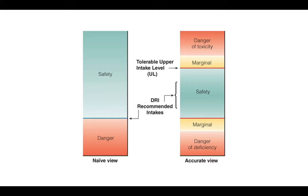The textbook presents a naive view versus an accurate view. The naive view looks at these things as a safe amount to consume, with a small area of recommended intakes, and anything beyond that is toxic. The more accurate view is that if you're falling within the DRI, you are likely safe, and there is a little bit of room for error on both sides before you get into the danger zone of toxicity or deficiency. It is not so black and white — the DRI is set up so that if you get in that range of the recommendation, you are probably in good shape.